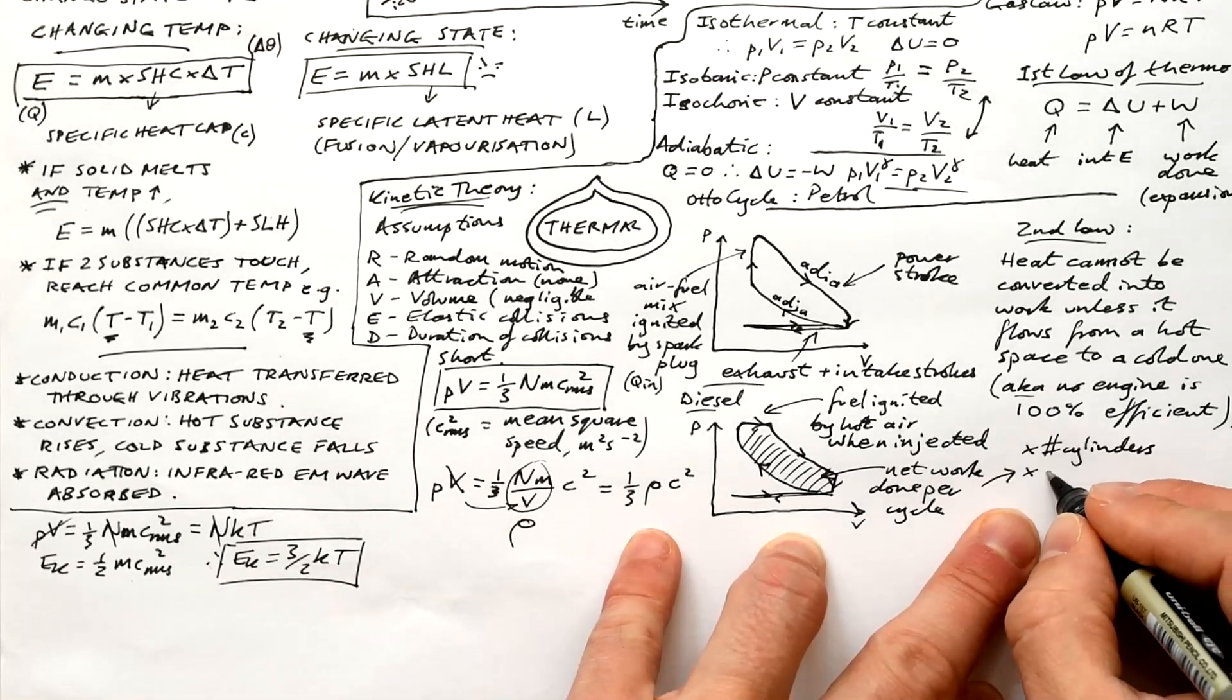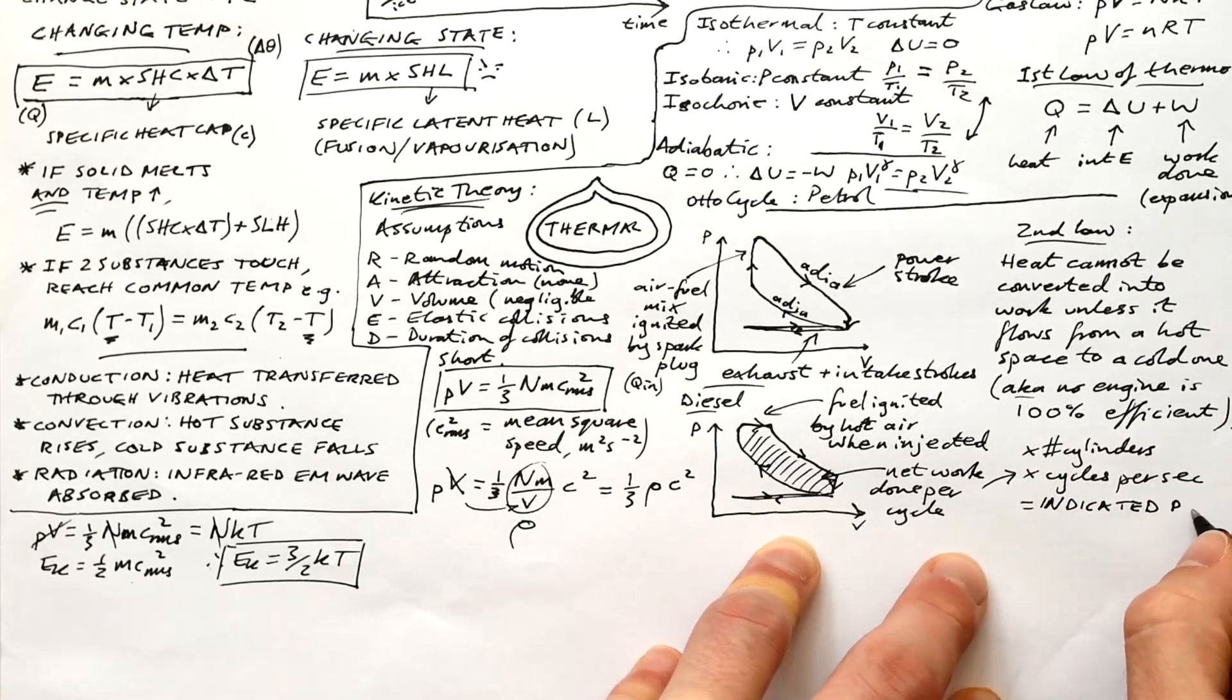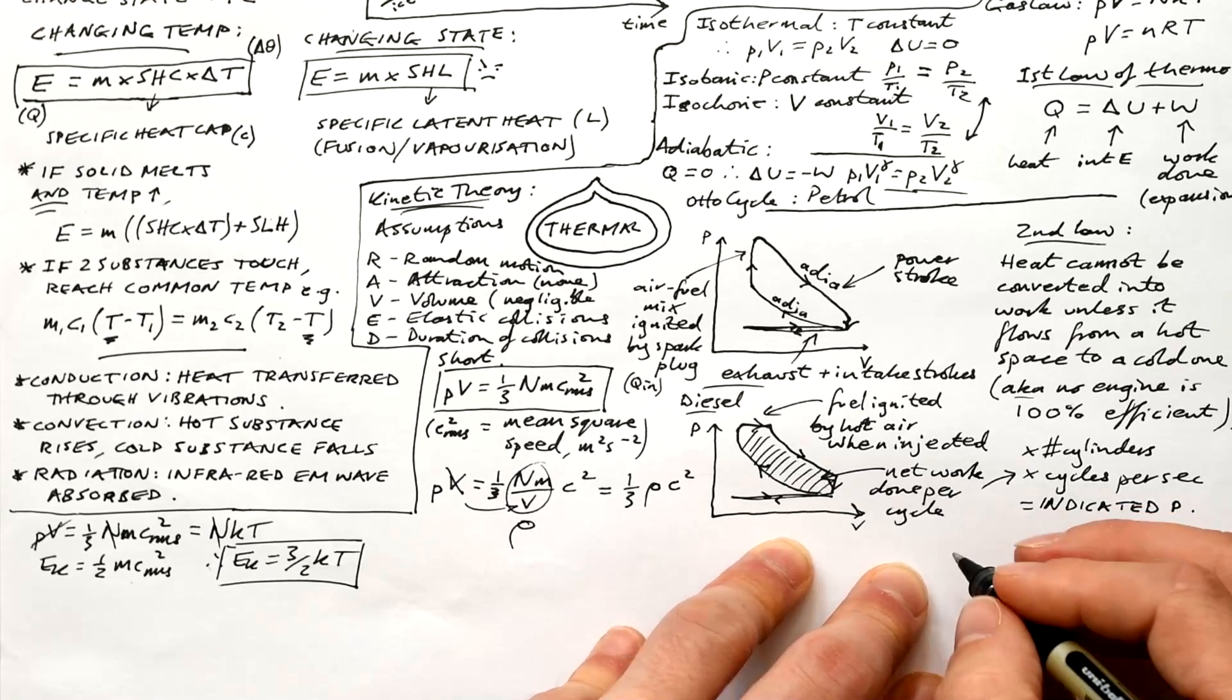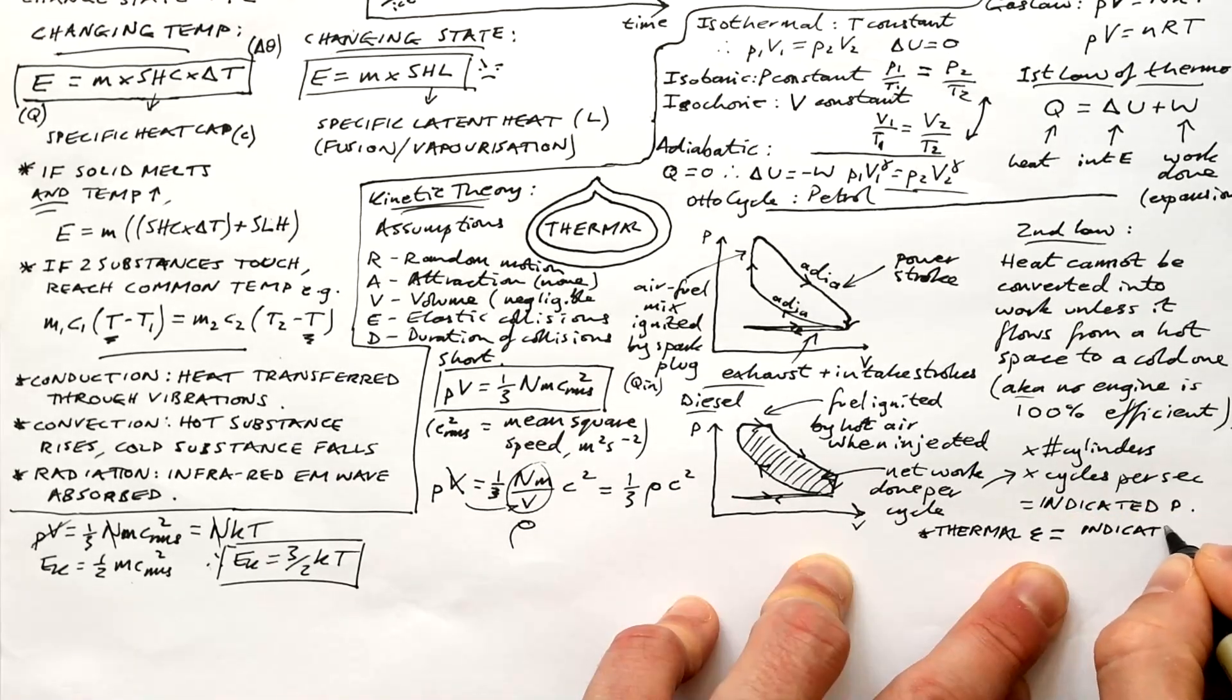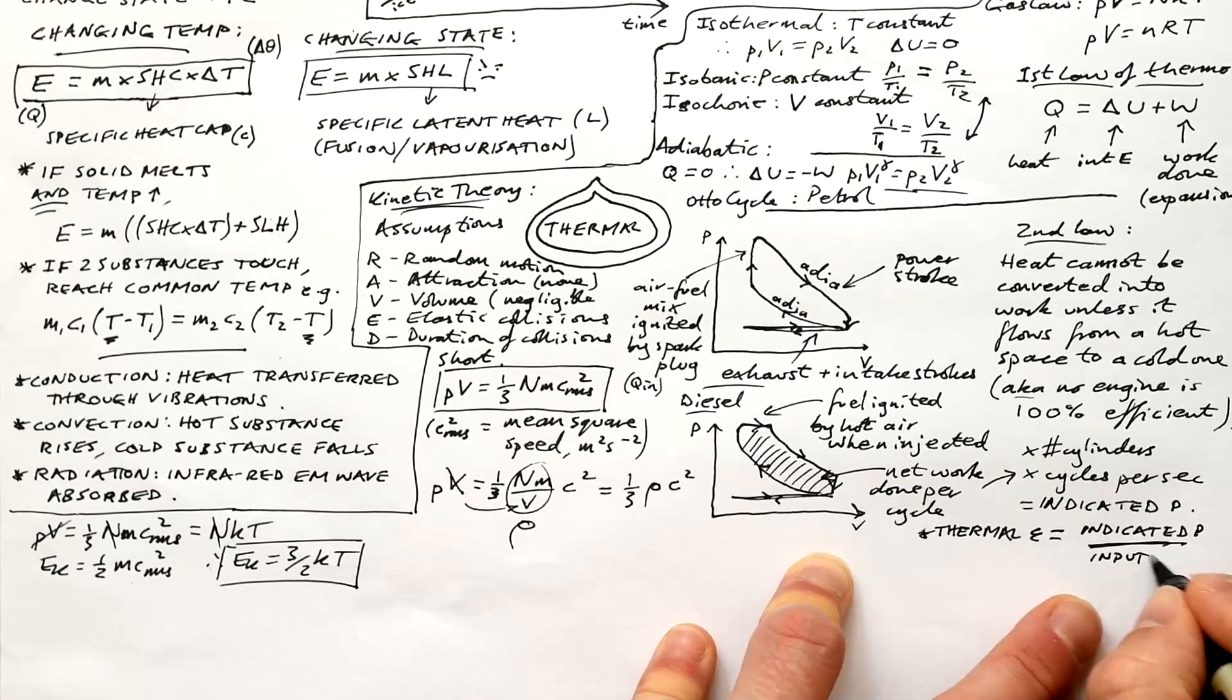If you times that by the number of cylinders and times that by the cycles per second, then that gives us the indicated power of the engine. And obviously any area under a PV graph is equal to work done. Thermal efficiency is equal to indicated power divided by input power. We don't really use percentages, just decimals now.